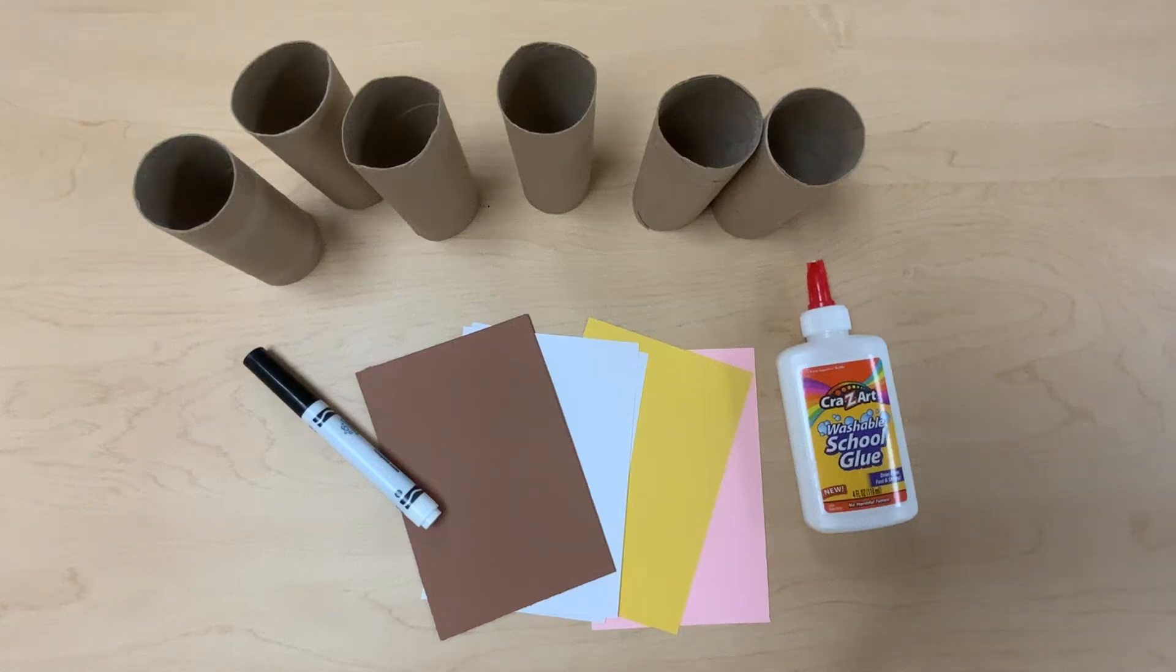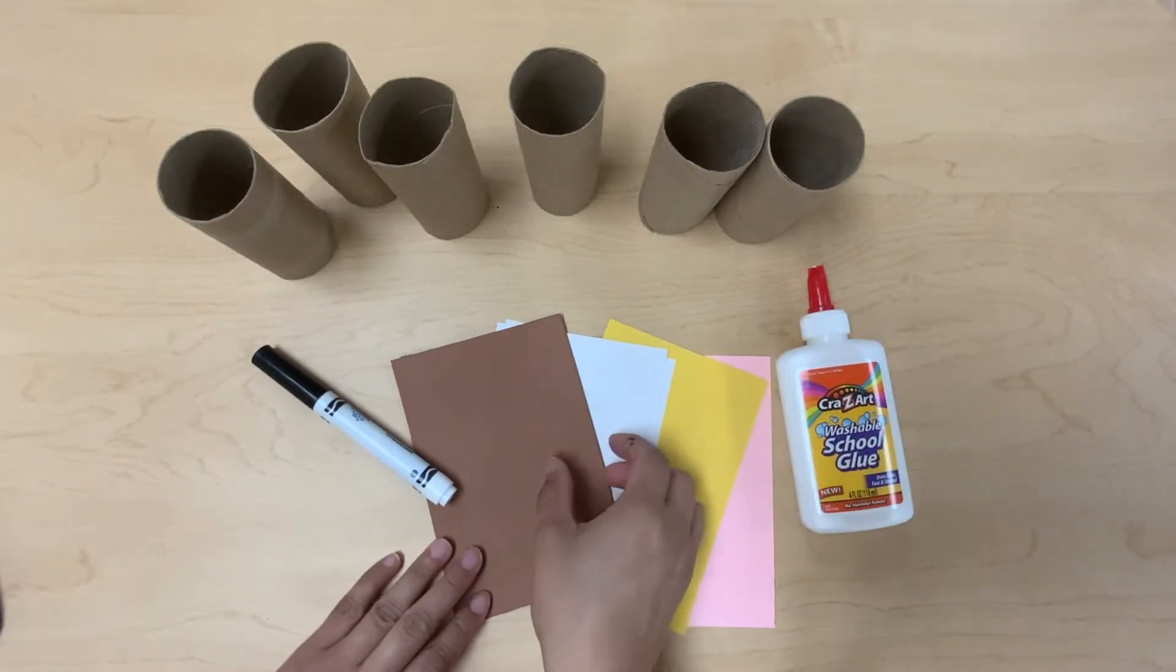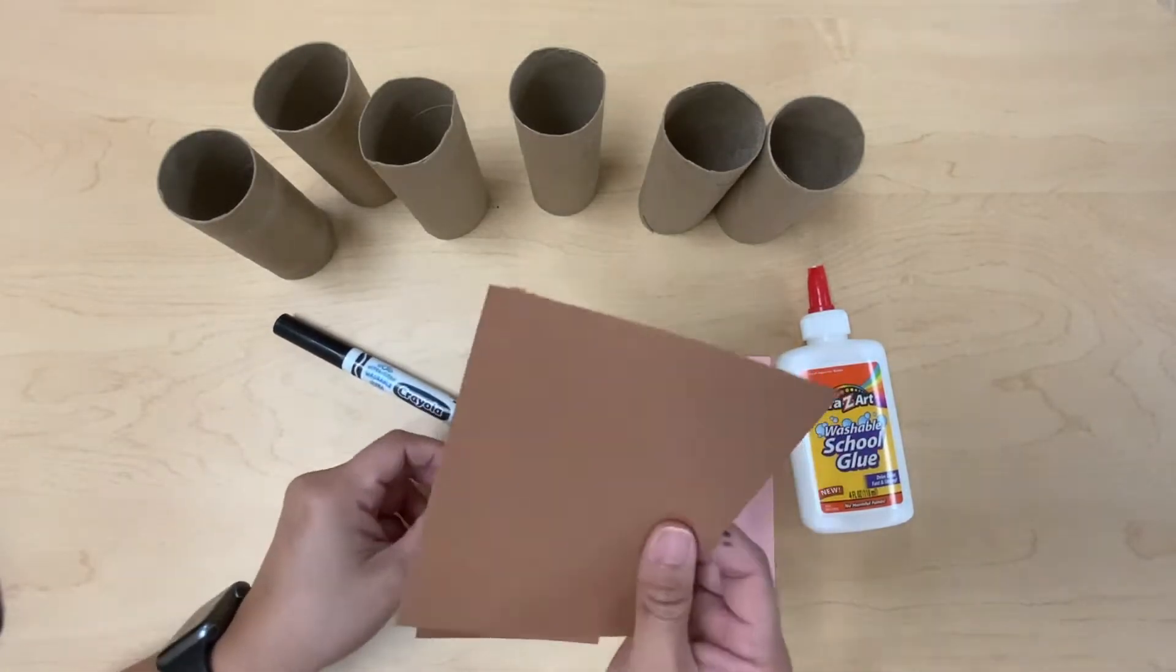Hi everyone, for this activity you're gonna need glue, marker, construction paper in pink, yellow, white, and brown, and six toilet tubes. Are you guys ready? Let's begin. First I'm gonna take one of the brown construction papers and one toilet tube, and I'm gonna wrap the brown construction paper around the toilet tube. If you need help, you can have your mom or dad help you with this.